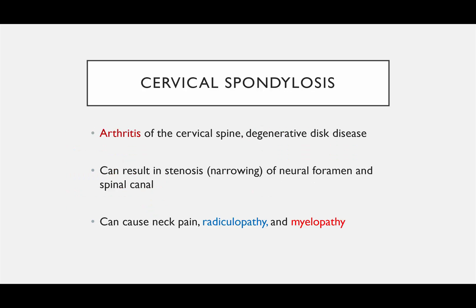Cervical spondylosis — anything 'spondy' refers to the spine. Spondylosis is basically arthritis of the cervical spine, often with degenerative disc disease. This can result in stenosis or narrowing of the neural foramen as well as the spinal canal. The neural foramen is where the nerve roots are, and the spinal canal is where the cord is. Narrowing in the foramen can compress the nerve root, and narrowing in the canal can compress the cord.